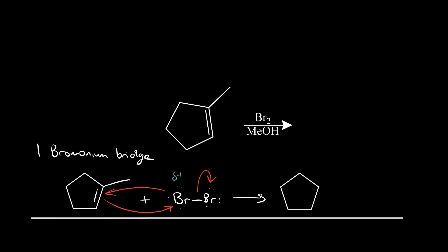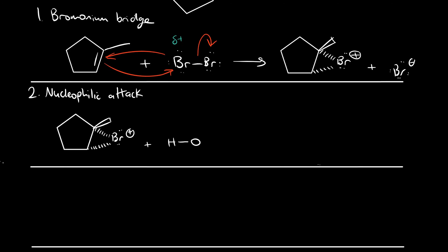Just to keep things fresh, I'll have the bridge established behind the plane towards the back, meaning it's on a dash. Now if we consider Br2 as the limiting reagent in the reaction, methanol is in obvious excess here. So it can act as a nucleophile and attack the bridge, even though it's not a strong nucleophile.